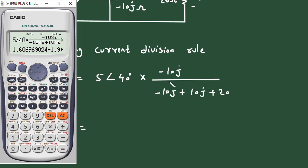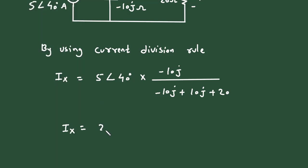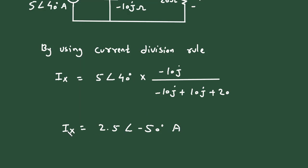Solving this in the calculator, we get Ix = 2.5∠-50° ampere in polar form.